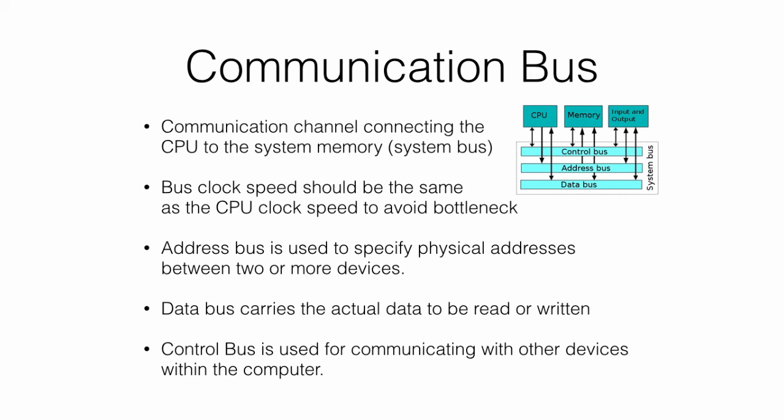The bus connecting the CPU and memory is one of the defining characteristics of the system and is often referred to as a system bus. Like CPUs, buses also have clock speeds. Ideally, the CPU clock speed and the bus clock speed should be the same so neither of the components slows down the other.